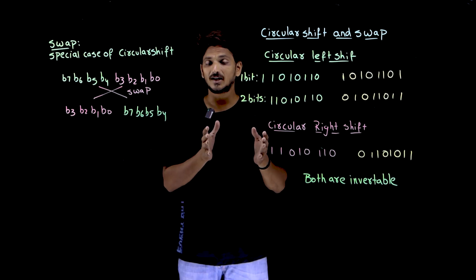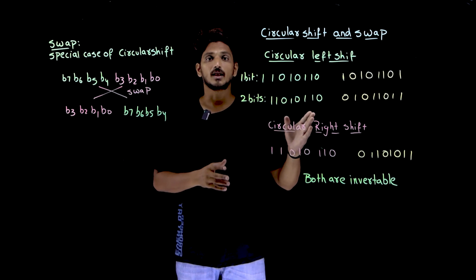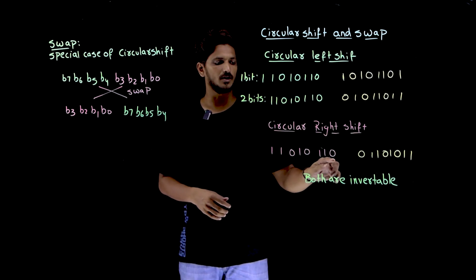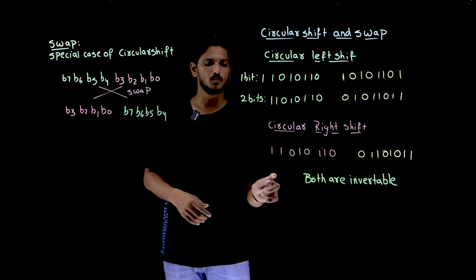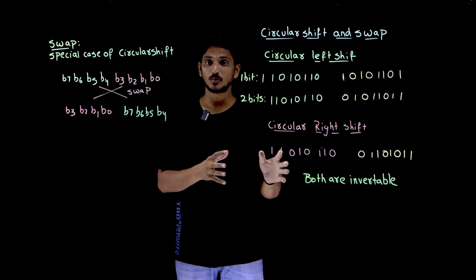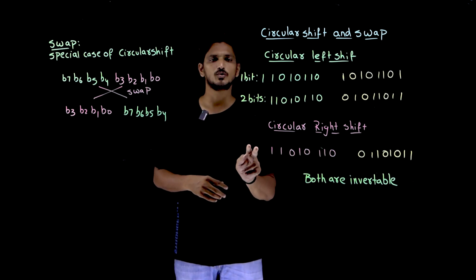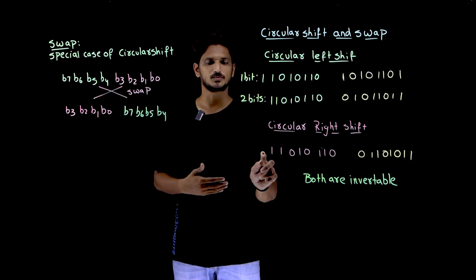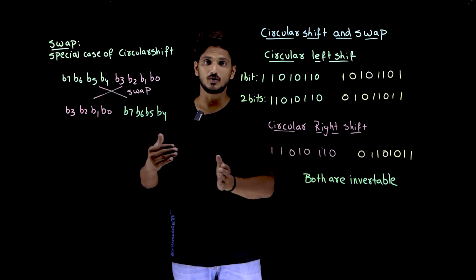Similarly, exactly the opposite, we are going to do circular right shift. If this is the input, right shift means the first bit is moved to the last position. Here we are moving only 1 bit. If you move 2 bits, the first 2 bits will move to the last position — first bit moves to last, then the second bit moves to last. This is how it works.